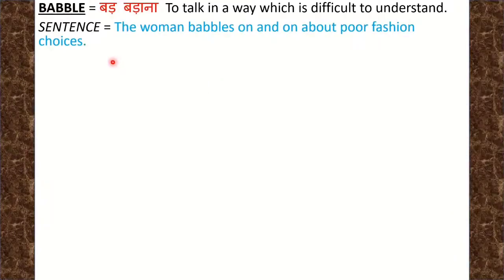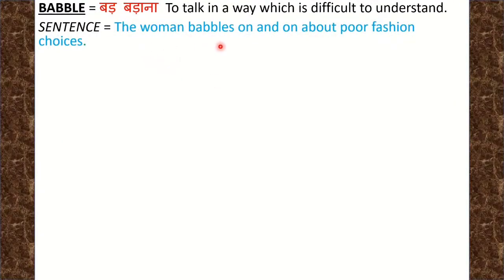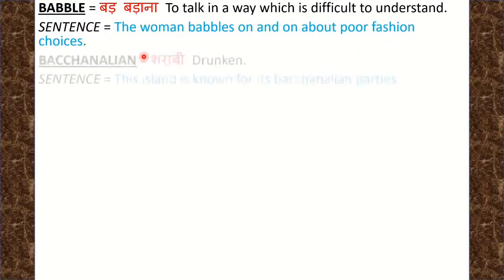Our first word is Babble. Babble means बड़बड़ाना — to talk in a way which is difficult to understand. इस तरह बात करना जो समझने में कठिन हो. Sentence: The woman babbles on and on about poor fashion choices. वो औरत पुरानी fashion choices के बारे में बड़बड़ाती गई.